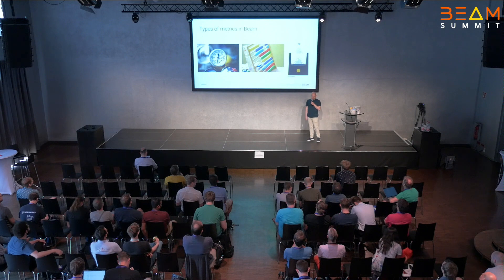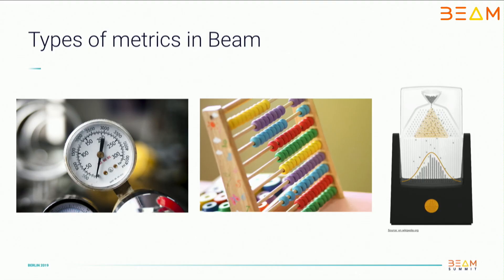If you're new to that area and have never worked with any kind of metrics before, where should you start learning? Let's focus on the three types of metrics that you can currently use in Apache BIM. You can currently store metrics in the form of gauges, counters, and distributions.